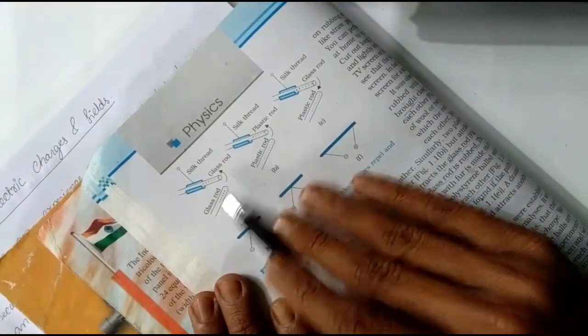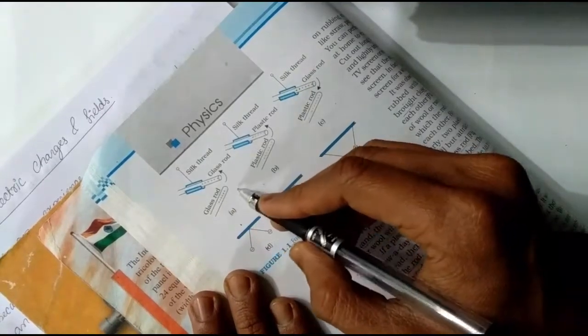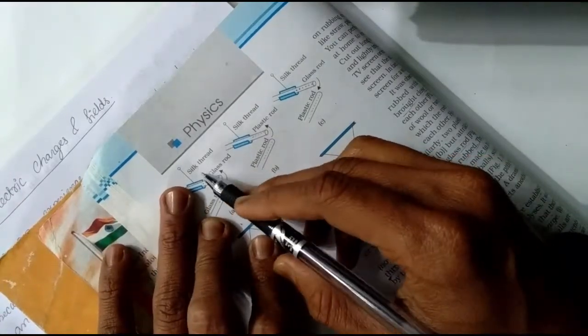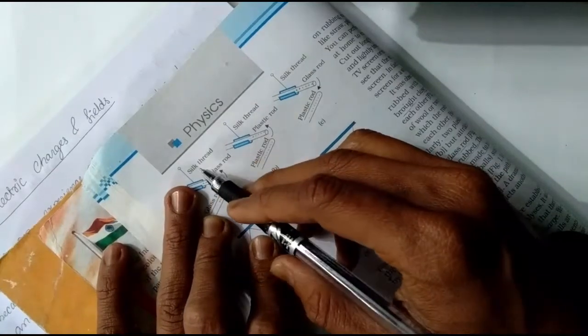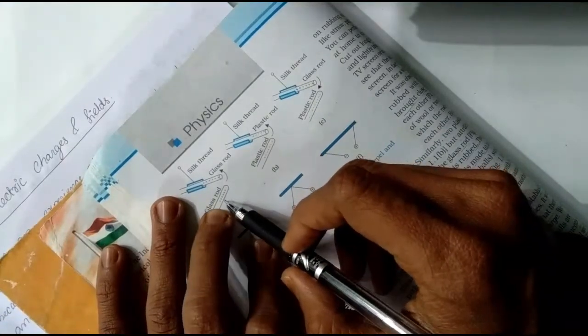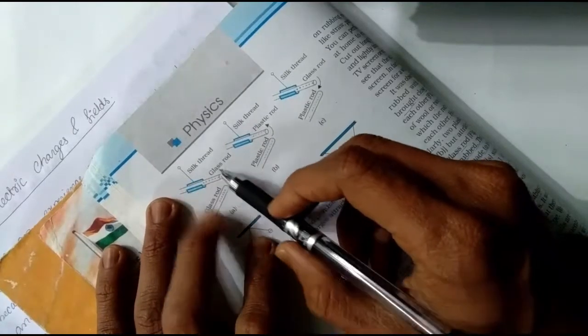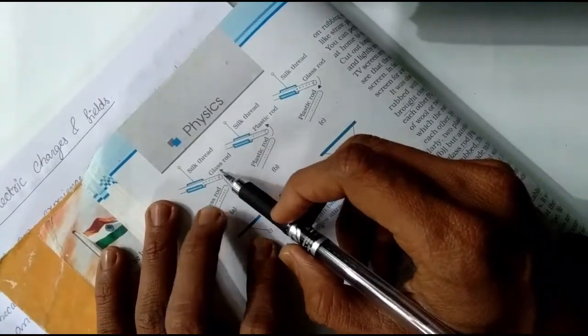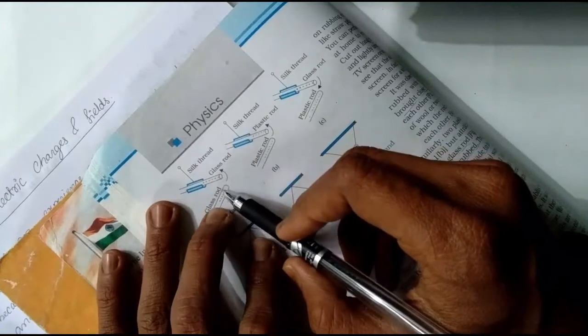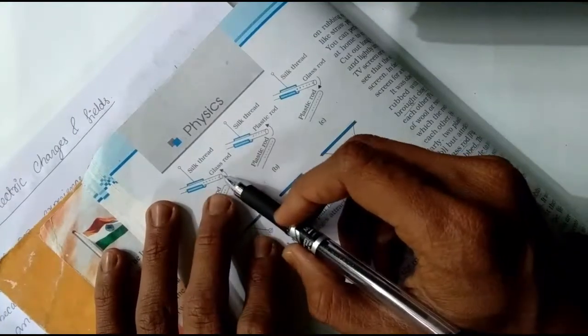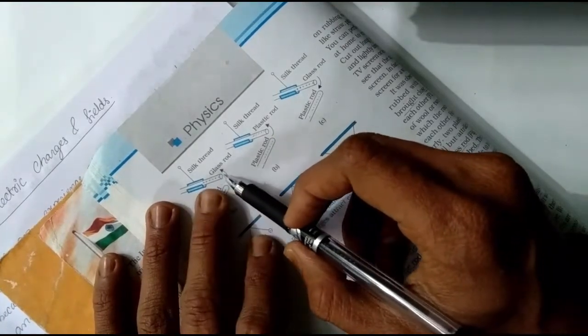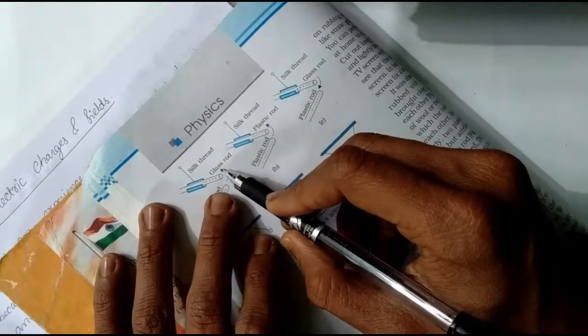We can see from this experiment that the glass rod becomes positively charged when rubbed with silk cloth. Then we take this positive rod and hang it with a wire or thread. When we bring another positively charged glass rod close to it, both glass rods are positively charged.